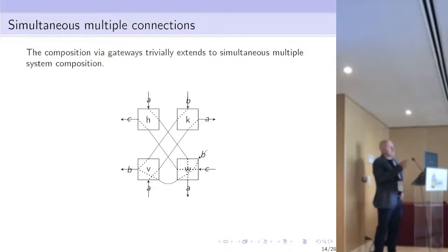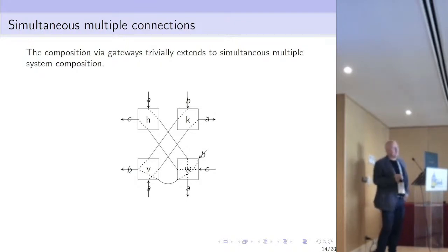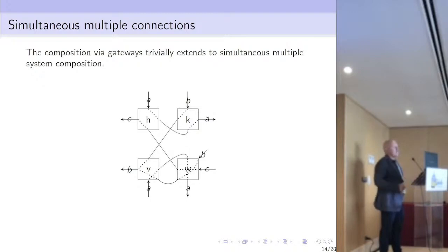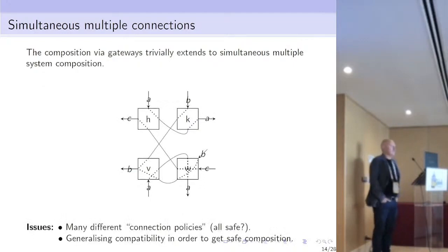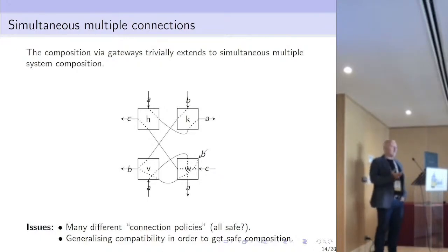Here you replace H with a forwarder: once message A is received it is forwarded to component W, which then sends it to the rest of its system. But you can have another situation where H receives A and forwards it to K, while the A received by B is forwarded to W. So we are in a case where we have many possible different connection policies, and not all of them can be safe — we have to check which connection policies are safe by generalizing the compatibility relation.